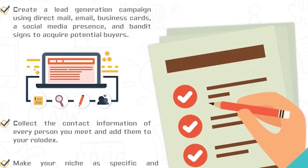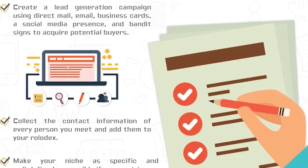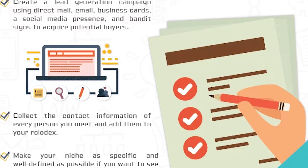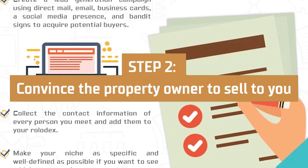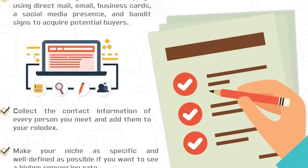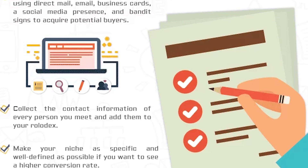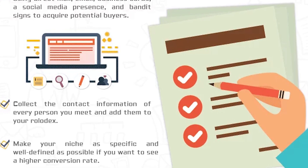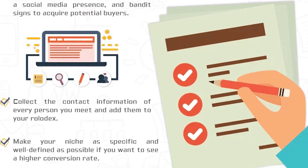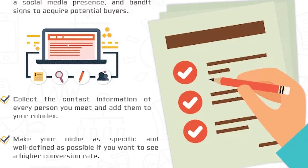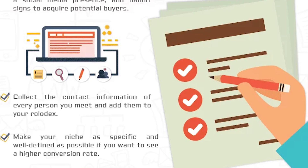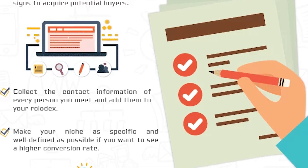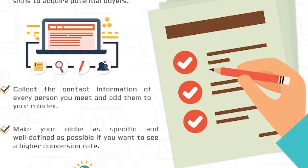In general, real estate agents feel that wholesalers are unscrupulous and wish to uphold the ethical code they took on when becoming real estate agents. Once you have identified the property as an attractive deal, it will be time to convince the property owner to sell to you. When approaching the owner, it is important to go about it in a sensitive way, gain their trust, and be professional and courteous. After discussing the benefits of selling to you, talk about how going with your company will alleviate whatever pain points are motivating them in the first place.